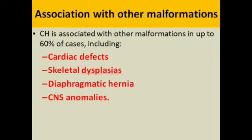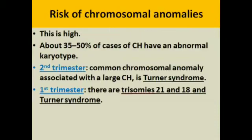Association of cystic hygroma with other malformations is present in up to 60 percent of cases, such as cardiac defects, skeletal dysplasia, diaphragmatic hernia, and central nervous system anomalies. The risk of chromosomal anomalies is very high — about 35 to 50 percent of cases of cystic hygroma have an abnormal karyotype. In the second trimester, the common chromosomal anomaly associated with cystic hygroma is Turner syndrome, while in the first trimester there are trisomies such as Trisomy 21, Trisomy 18, and Turner syndrome.